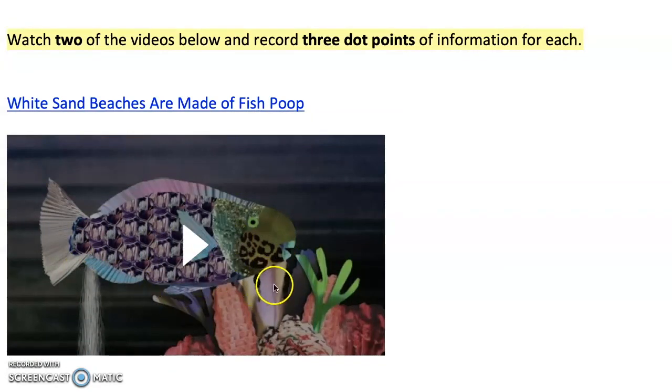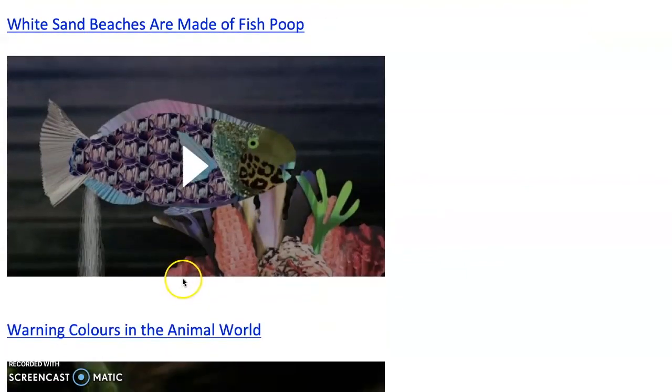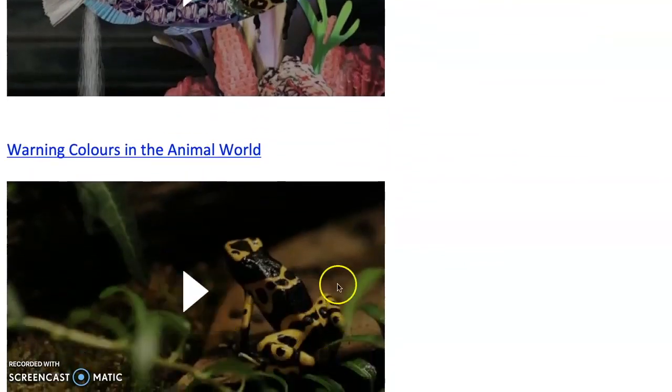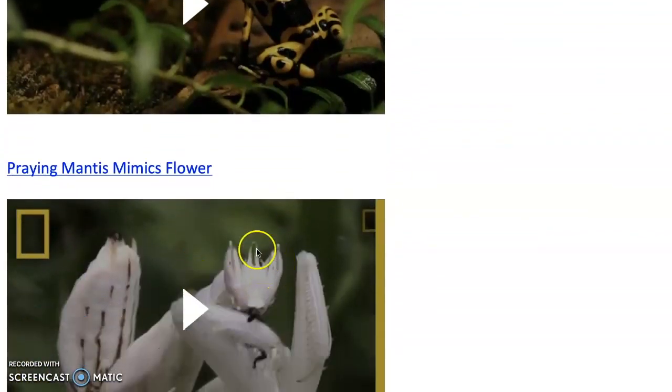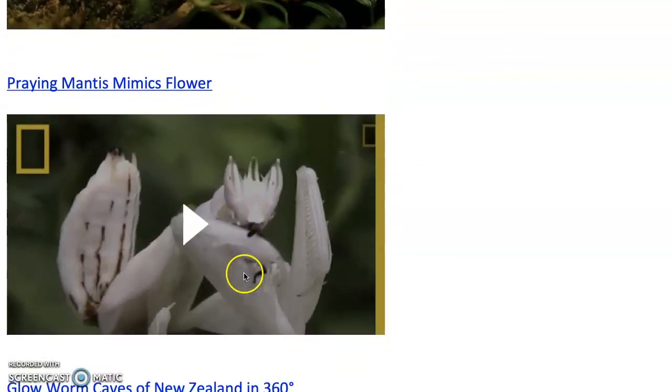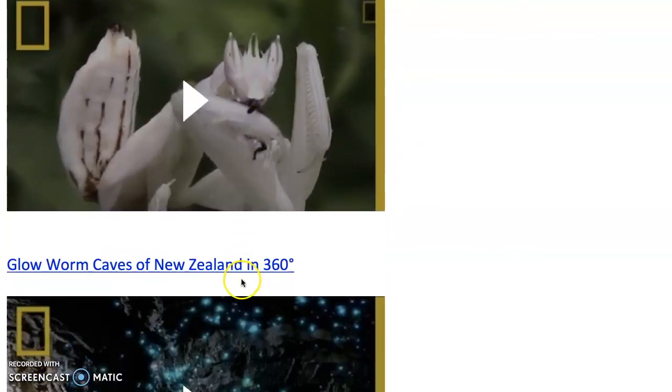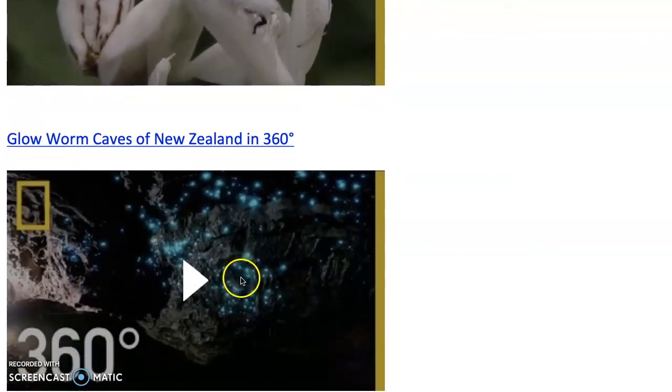This is about parrot fish—if you've ever been snorkeling you can hear them munching away on the coral. They have very big teeth at the front of their mouth. This one here is on poison arrow frogs. I love these ones, so these are praying mantises that mimic flowers. Then there's another video here on glow worms and one on how jellyfish stings.